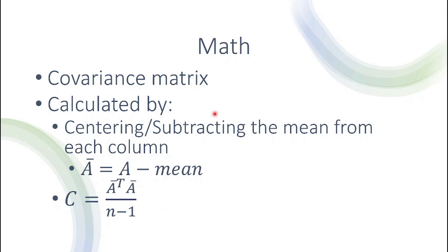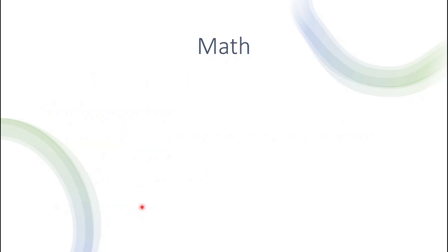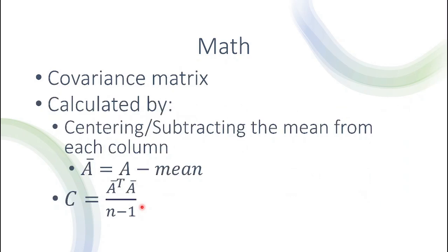To calculate the covariance matrix in linear algebra, the first thing we do is subtract the mean of each column — recall the variance formula requires subtracting the mean. We create this matrix A-bar by subtracting the mean of each column. Then the covariance matrix is calculated as A-bar transpose times A-bar, divided by N minus 1. This is the exact mathematical operation equivalent to computing pairwise covariances. Please let me know in the comments if you'd like a short video showing this calculation step by step.